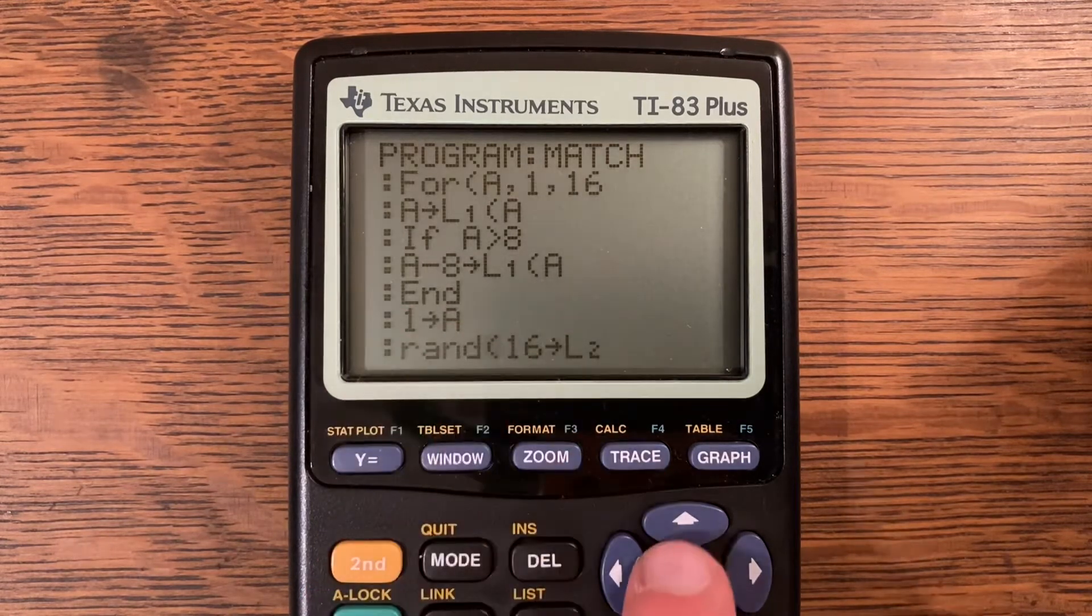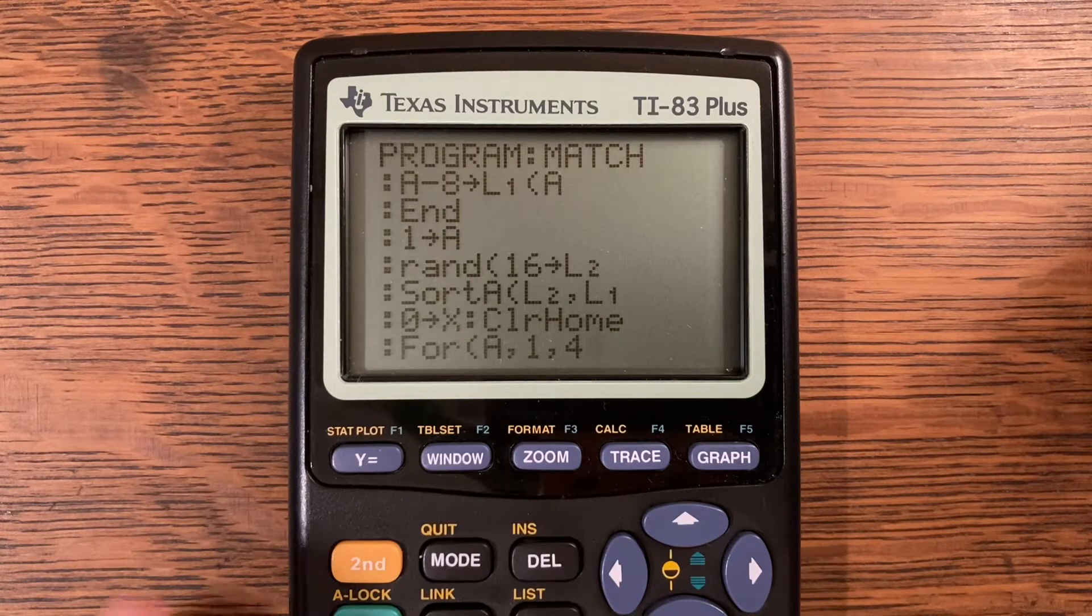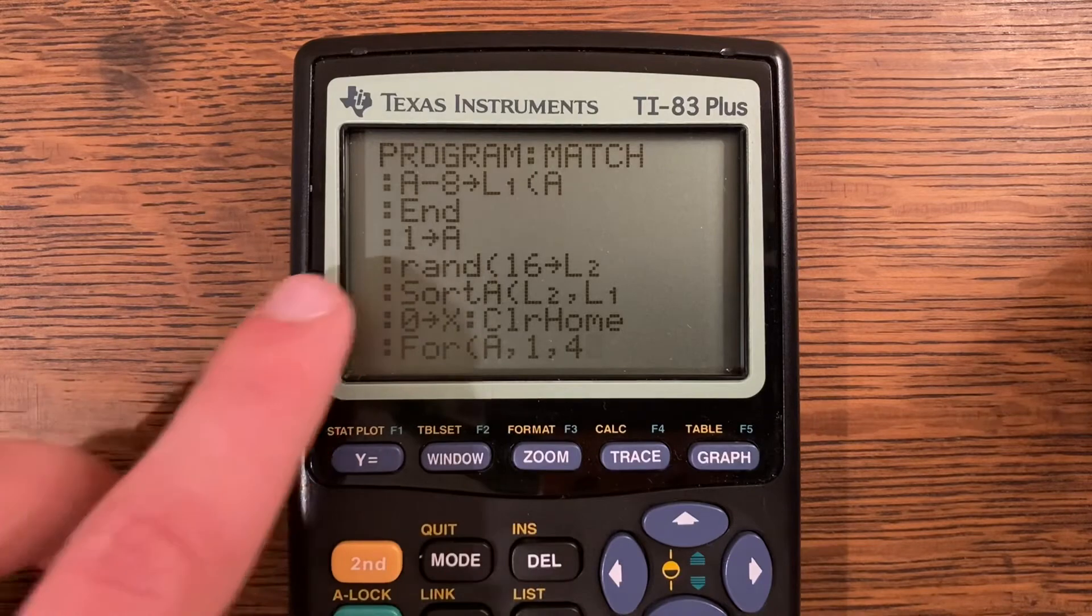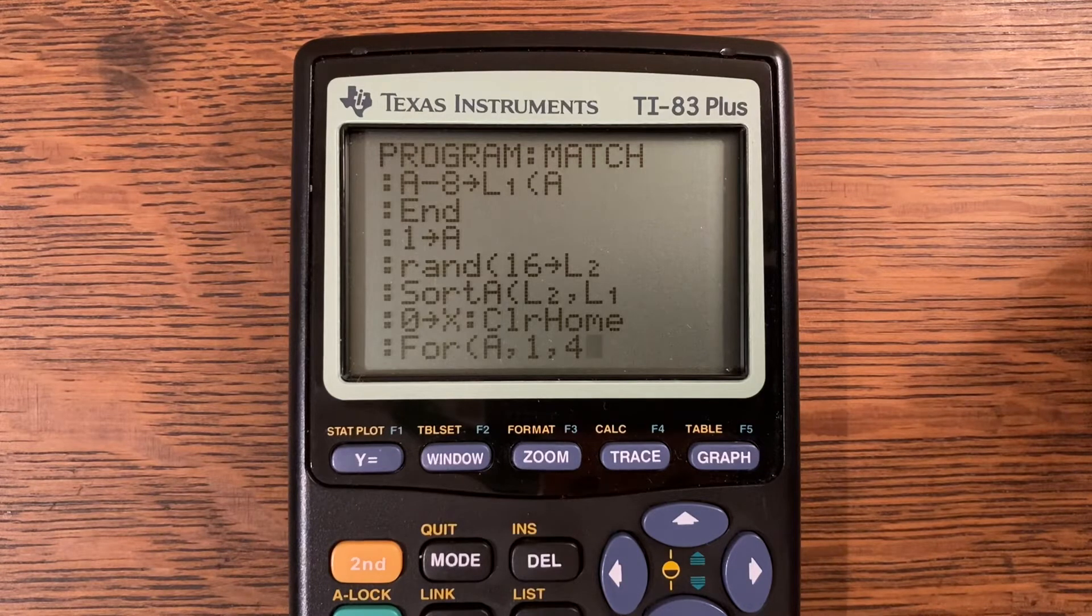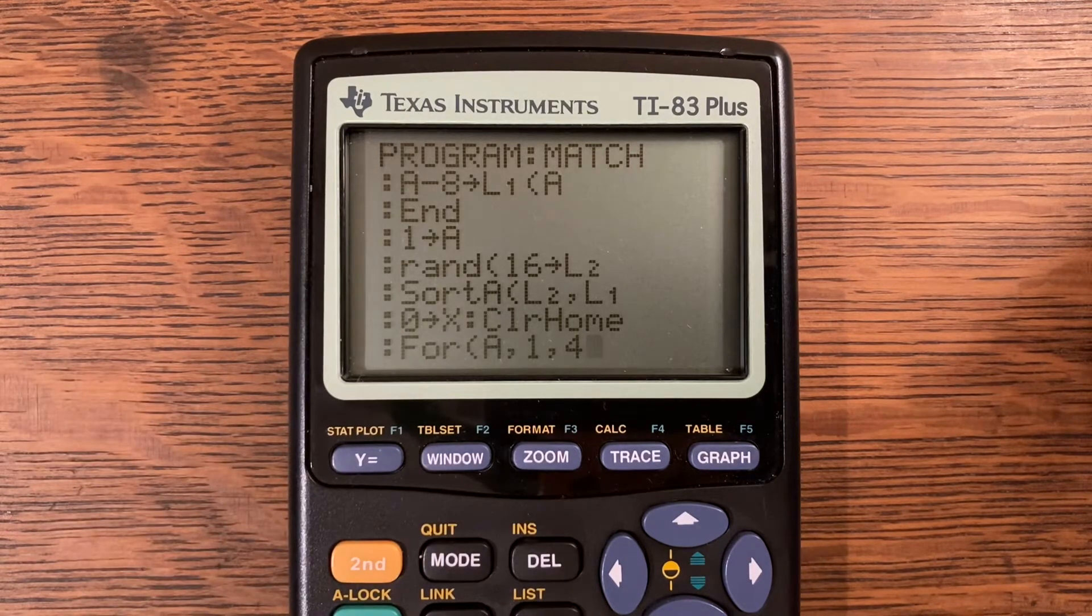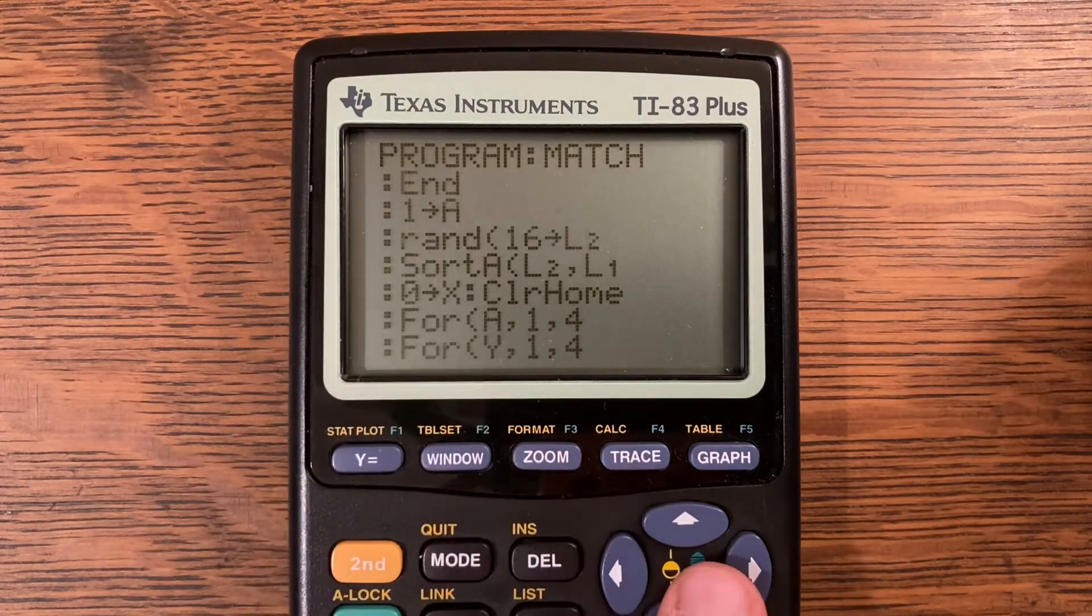One store into A, Rand 16 store into L2, sort A L2 comma L1. That is a really easy way to randomize a list. I found that on TI-BASIC developer and I've used it in a few videos. It's a really simple way to randomize that list very efficiently. Zero store into X and clear home.